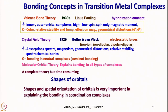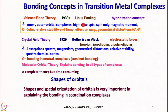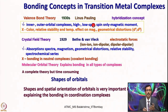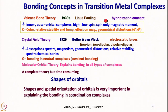Now let us look into the bonding concepts that were later used to explain bonding in transition metal complexes. The first was valence bond theory, proposed in 1930 by Linus Pauling, who brought the hybridization concept to explain bonding and several properties. Using this theory, he could explain inner orbital complexes, outer orbital complexes, high spin and low spin complexes, and spin-only magnetic moment. In his famous book 'The Nature of the Chemical Bond,' Pauling gave emphasis to recognizing magnetic properties of transition metal complexes using valence bond theory. However, it can only predict spin-only magnetic moment; other properties including color, effective magnetic moment, and geometrical distortions could not be explained.